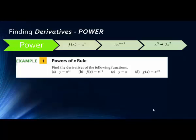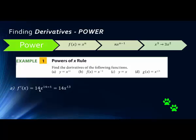Let's try some examples with the power rule. This is your hint to pause the recording and try these four problems. The first problem is x to the 14th. We bring the exponent 14 down in front, subtract 1 from the exponent, and we get the derivative: 14x to the 13th power.